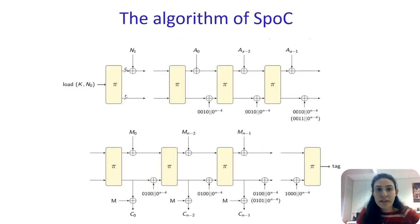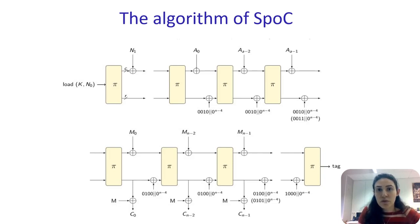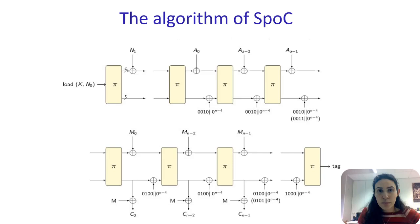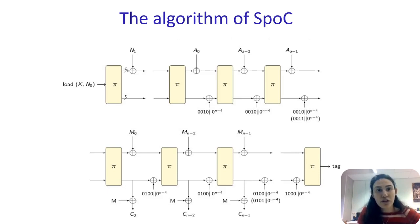This is a diagram of the mode of operation of SPOC. SPOC is a sponge construction, and therefore the state is divided into rate and capacity bits. The authors introduce mask capacity bits, which is where the message and associated data are added. The mode of operation consists of the following phases: initialization, associated data processing, message processing, and tag generation.